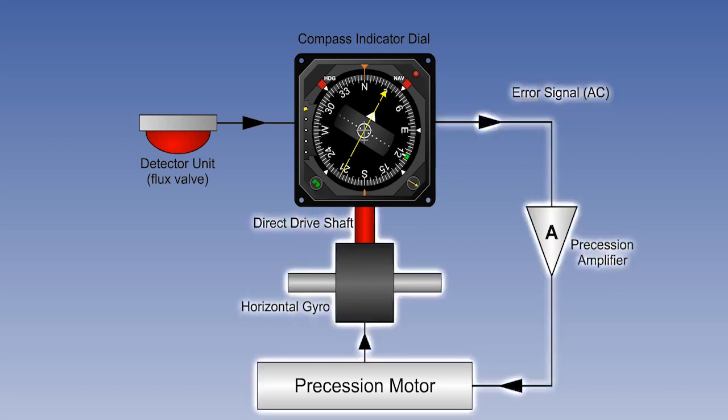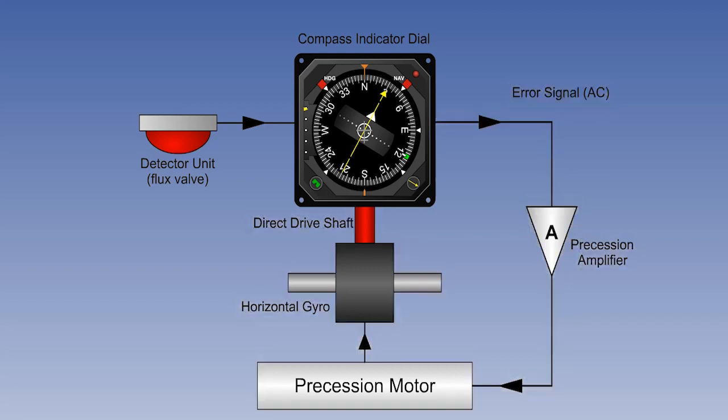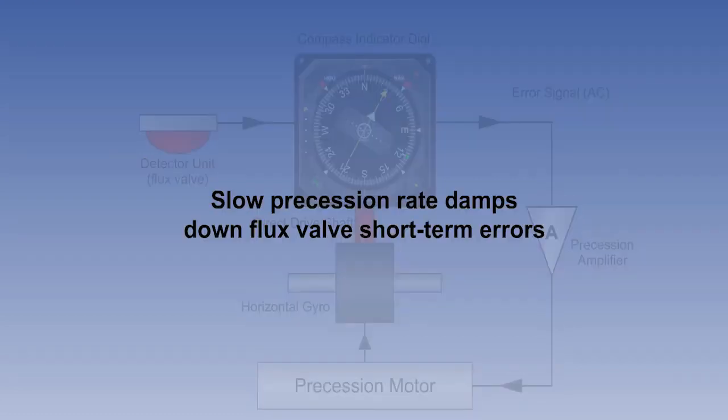The gyro will therefore respond slowly to this short-term error. The error may well disappear before the gyro has turned significantly. If not, as soon as the flux valve signal is correct again, the gyro will follow it back to the correct value. So, because of the choice of precession rate of the motor, any small short-term flux valve errors are damped out by the gyro's slow response.